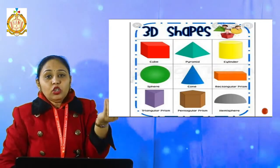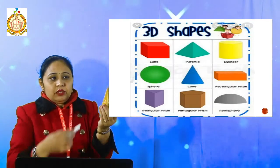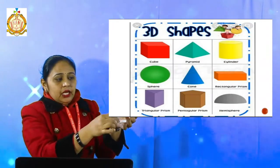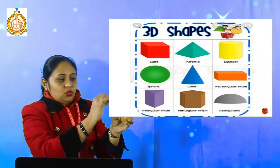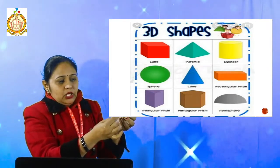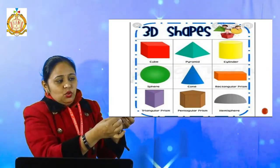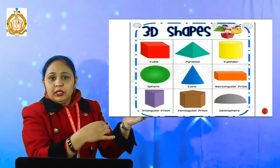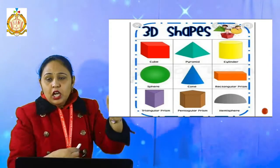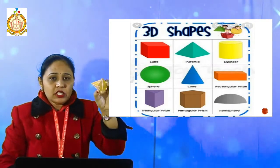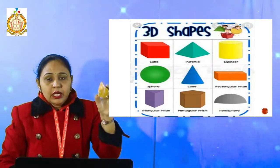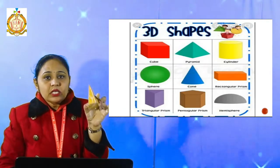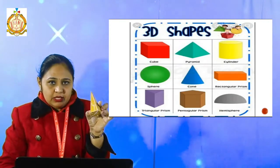How many corners does it have? The first one is there at the top, then at the base: one, two, three, four, five, and then six. How many corners does it have? It has six corners — that means it has six vertices.